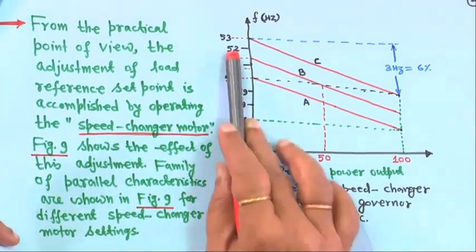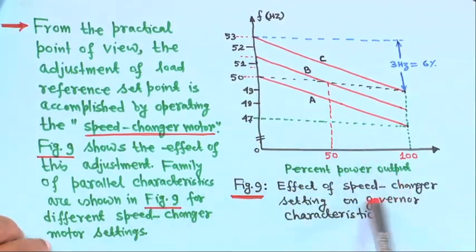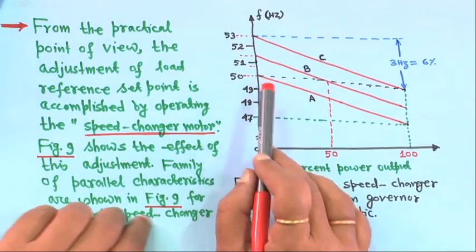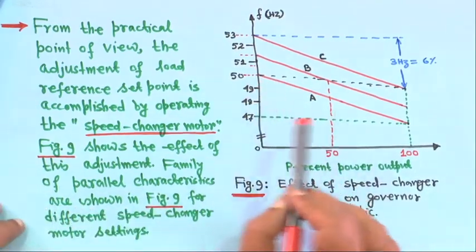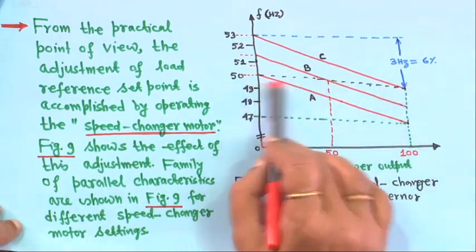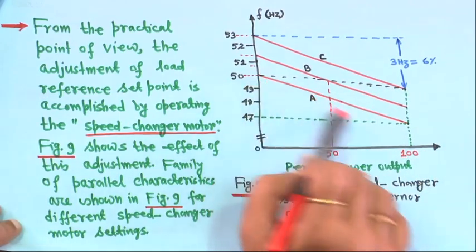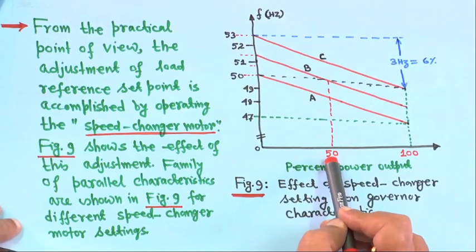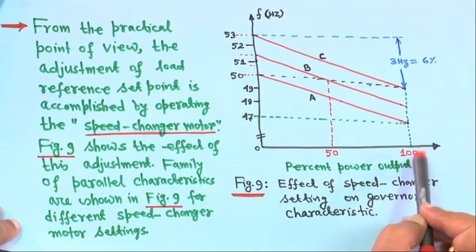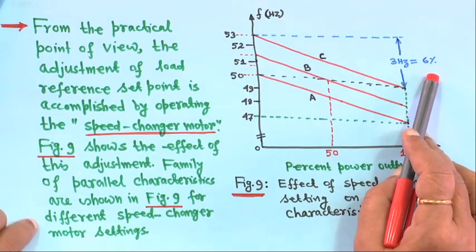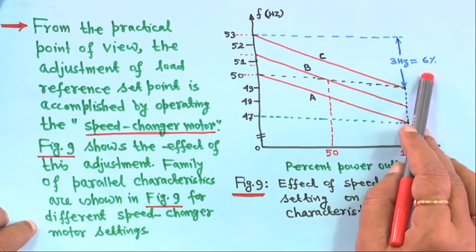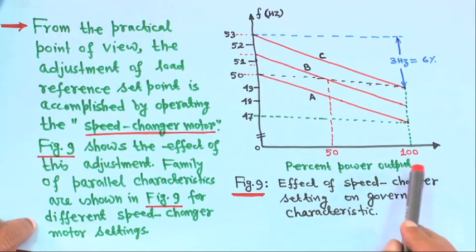The horizontal axis is frequency in hertz, showing the effect of speed changer setting on governor characteristics. At 50 hertz, for characteristic A the generation is 0, because drawing a horizontal line at 50 hertz starts from A. For B it is 50 percent, and for C it is 100 percent. A 3 hertz change equals 60 percent in a 50 hertz system, so 1 hertz equals approximately 2 percent of power output.